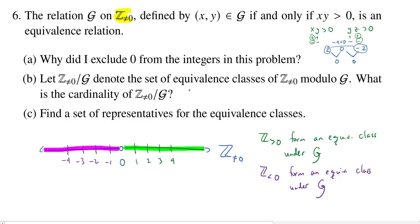So we can write down here that the actual elements of the quotient set are just the set of positive integers and the set of negative integers.